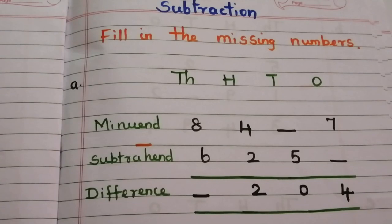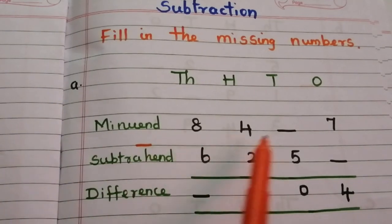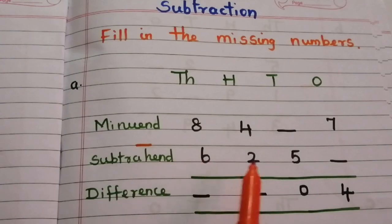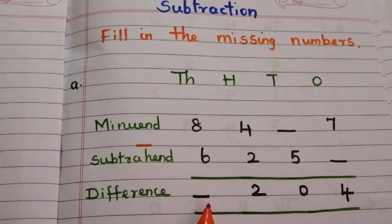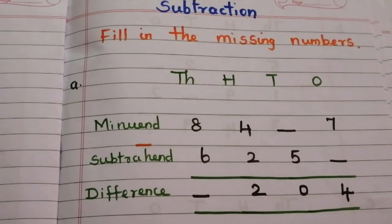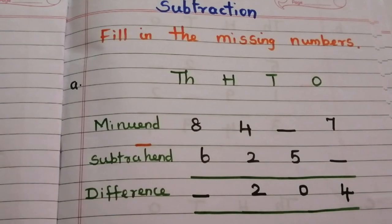Today we are going to discuss a very interesting topic: fill in the missing numbers for subtraction problems. In problem A: 84_ minus 7, equals 6, 25__, 204. This is the minuend, this is the subtrahend, and this is the difference.